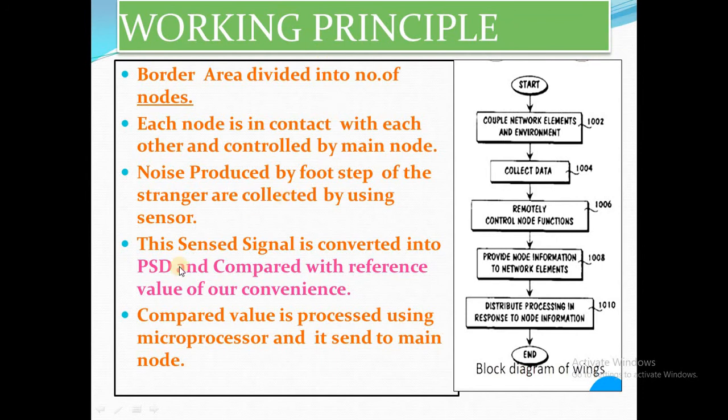For the working principle, consider a border area divided into a number of nodes. Each node is in contact with another node, and all nodes are controlled by a main node. Noise produced by the footsteps of a stranger is collected by the wireless integrated network sensor. This sensitive signal is converted into power spectral density and compared with a pre-fed reference value. If the reference value does not match the sensitive value, the system detects that a stranger has entered the area and triggers an alert.